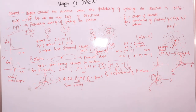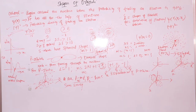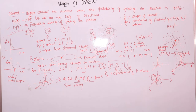For P orbitals, if the value of L is 1, the number of orientations given by the magnetic quantum number is 2L + 1, which gives 3 orientations: +1, 0, and -1. These are directed towards the three coordinate axes — X, Y, and Z — and all three orientations have the same energy, making them degenerate orbitals.